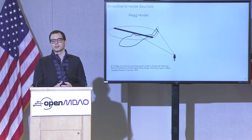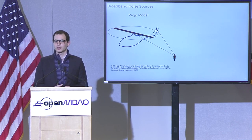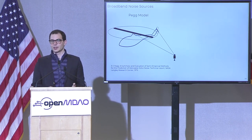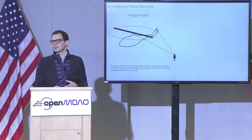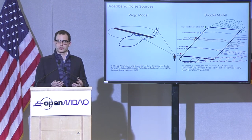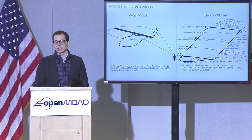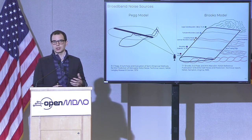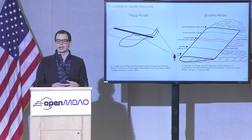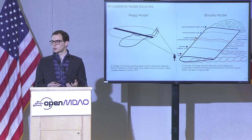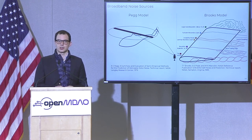On the broadband noise side it's much harder to predict. The PEG model is a very simple empirical method that's specifically for helicopters with a single tail rotor. For UAM we can essentially throw this model out because it doesn't match any of the vehicle configurations we're looking at. Instead we use the Brooks Pope-Marcolini model — called Brooks here — that looks at self-noise from an airfoil, such as tip vortex separation, and quantifies all these in a semi-empirical way. We can implement that for each one of our rotors and propagate that noise outward to predict our noise level.